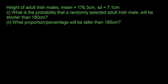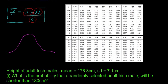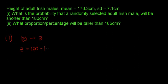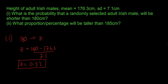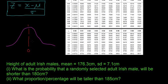What is the probability that a randomly selected Irish male will be shorter than 180 centimetres? The first thing we do is convert 180 centimetres into a z-score. Z is equal to 180 minus 176.3 divided by 7.1, which equals roughly 0.52. So someone who is 180 centimetres tall is 0.52 standard deviations above the mean.